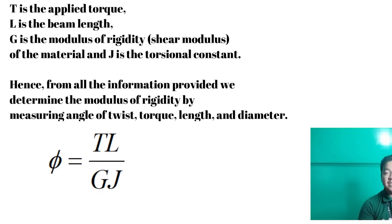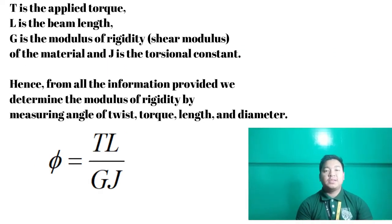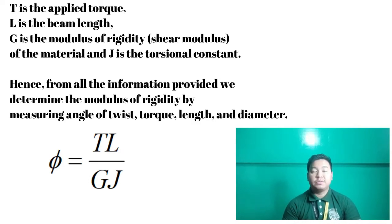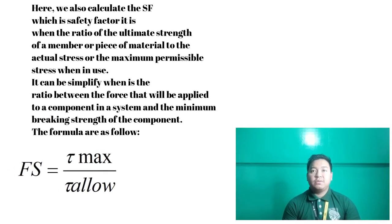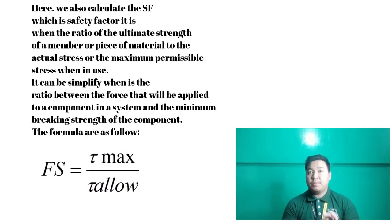Hooke's law enables to calculate the angle of twist where the formula are shown. Here, we can distribute as T as the applied torque, L is the beam length and G is the modulus of rigidity or the shear modulus of the material and J is the torsional constant. Hence, from all the information provided, we determine the modulus of rigidity by measuring angle of twist, torque, length and diameter. Here, we also need to calculate the SF, which is the safety factor. It is when the ratio of the ultimate strength of a member or piece or materials to actual stress to the maximum permissible stress when it is used. This can be simplified when it is in the ratio between the force that will be applied to a component in a system and the maximum breaking strength of the component.